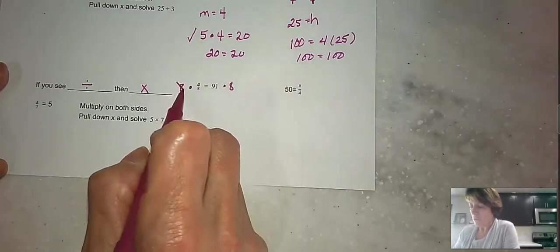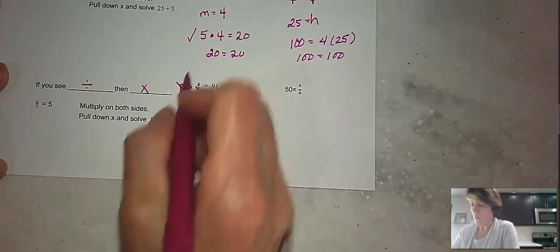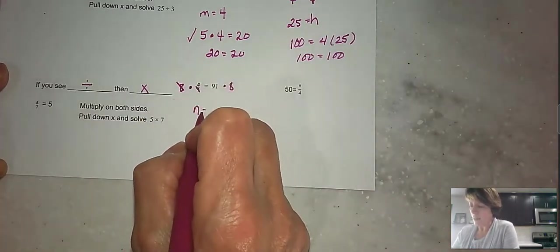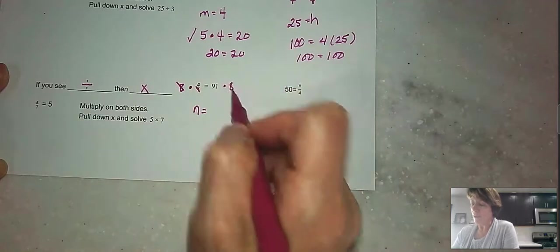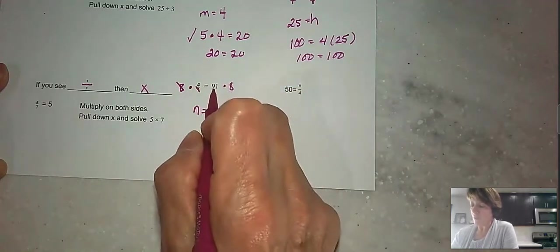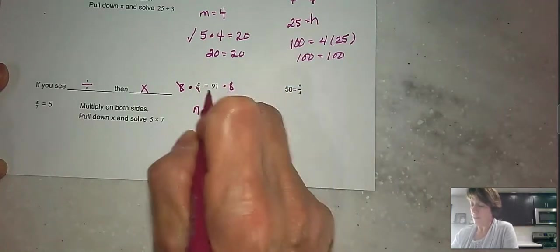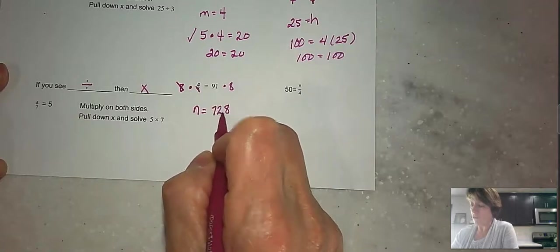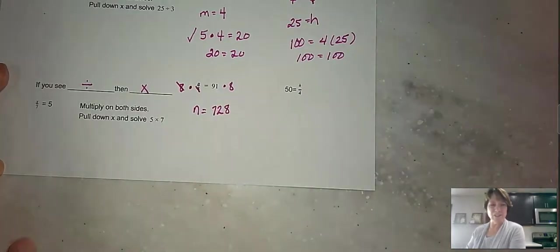When we do that, these two eliminate each other, and we pull down that n, and then we do 91 times 8, which 1 times 8 is 8, and 9 times 8 is 72. So our answer is 728.